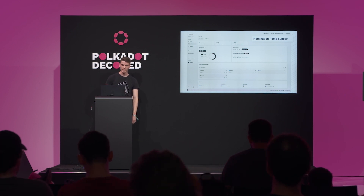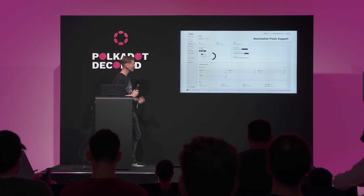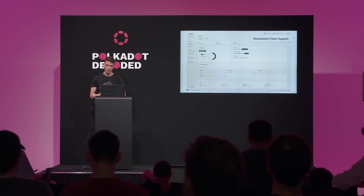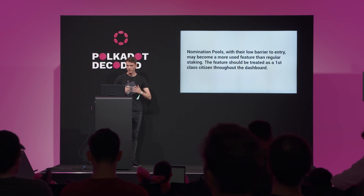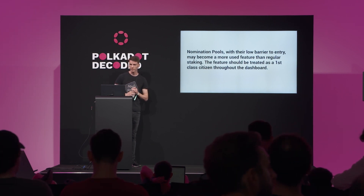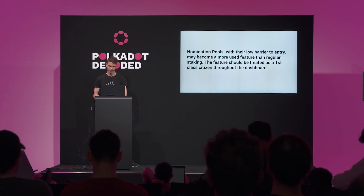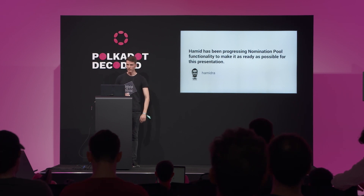Nomination pool support — on-chain staking pools — is a massive feature that's already on Kusama, and we're looking to support nomination pools throughout the app. We can already do most things: bond, membership, claiming rewards, et cetera. Owners of pools can change roles as they want. The minimum bond to create a pool is just one KSM. Nomination pools will probably become a more-used feature than regular staking as time goes by, just because of its low barrier to entry. So it should be treated as a first-class citizen throughout the dashboard. Hamid has been progressing nomination pools — he jumped into the code base and took a great lead. Thank you, Hamid.